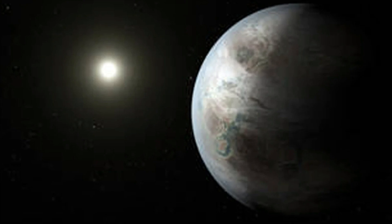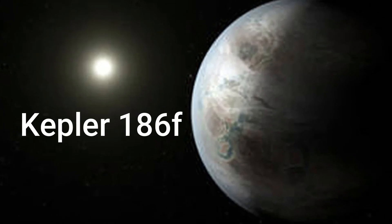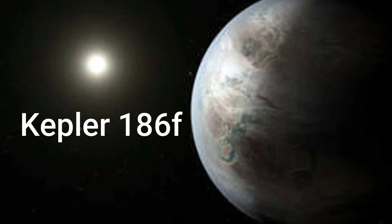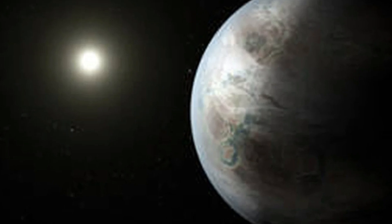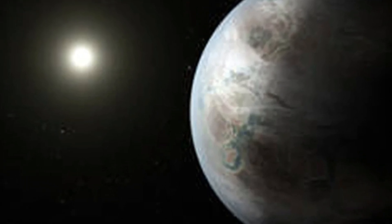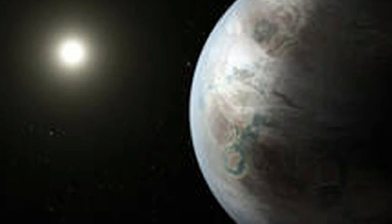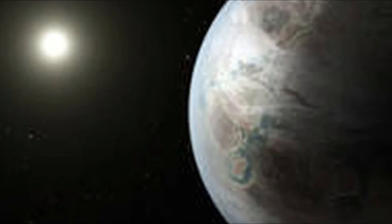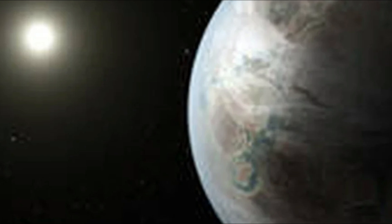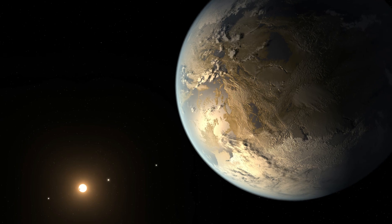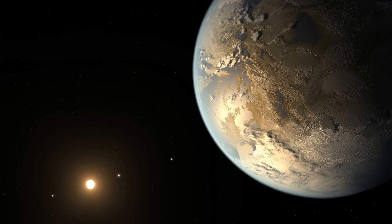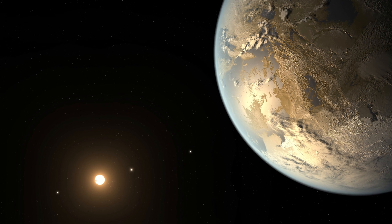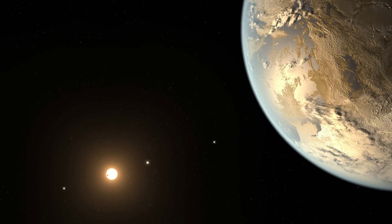Another intriguing candidate is Kepler-186f, an exoplanet located approximately 500 light-years away in the constellation Cygnus. Kepler-186f is situated in the habitable zone of its star, Kepler-186, which is also a red dwarf. Like Proxima Centauri b, Kepler-186f may face challenges related to climate and weather patterns.